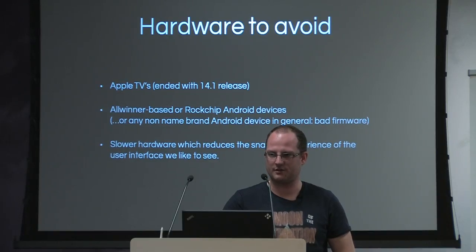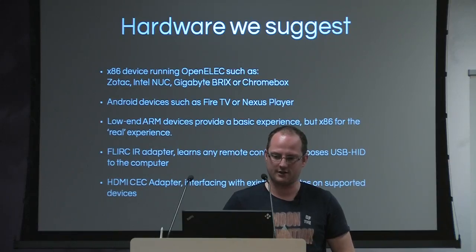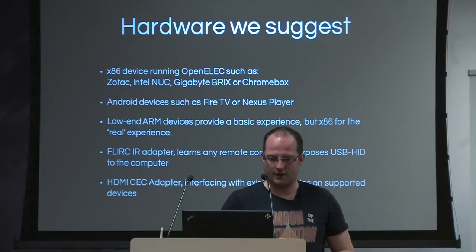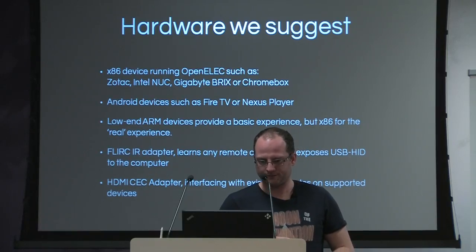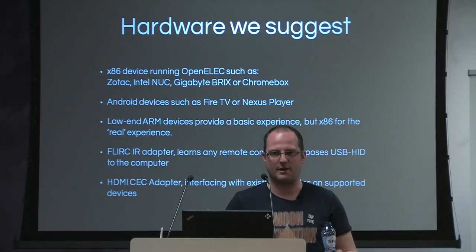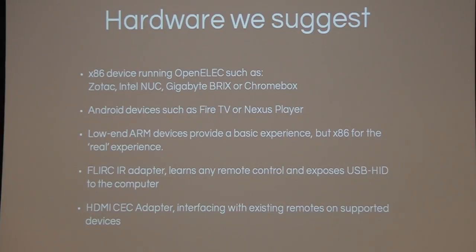The Raspberry Pi 2 is basically the lowest you should go for something usable. We suggest any x86 like Zotac, the Intel NUC is a very capable device though a bit more expensive, or the Gigabyte Brix or Chromebox — cheap devices that need some hacking to get working. For Android devices: the Fire TV or the Nexus Player from Google. For low-end ARM, the Raspberry Pi. The FLIRC adapter is a really cool device — you plug it in and it acts as a USB HID. You configure it, plug it into any computer, and it learns your remote. So if you pair your remote with the FLIRC, plug it into another computer and it works with no configuration needed — you can even swap out the device and your wife will never know.